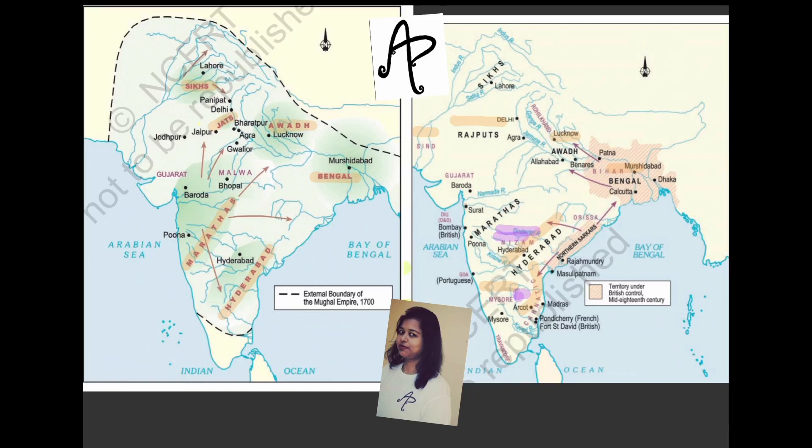Hi everyone. In the previous two videos we have already talked about the two sets of states — the successor states and the new states. In this video, before we start the 18th century situations, we'll quickly see the last set of states which is the independent states. Do not forget to check the previous videos, as we are covering the story in a chronological manner. Other videos on geography, environment, ecology, and Indian polity are also being uploaded. Please like, comment, share, and subscribe if you find the videos useful.